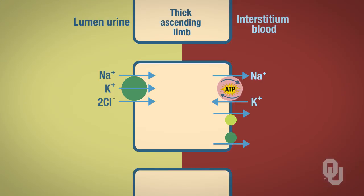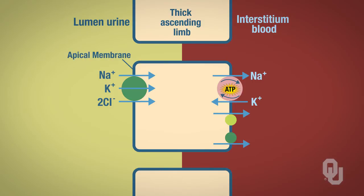Here's the descending limb. So let's get your bearings. This is the lumen of the ascending loop, so this would be the apical membrane. And then the basolateral membrane would be here, and you have your interstitial fluid and your blood off to the side of that.